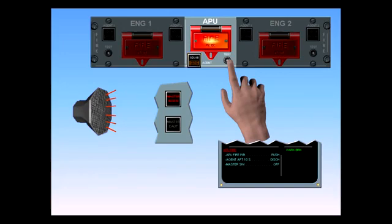If AC power is available, the master warning lights and an APU fire warning on the ECAM are illuminated and the continuous repetitive chime, CRC, sounds.